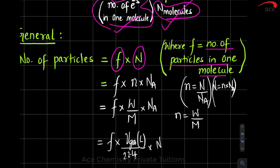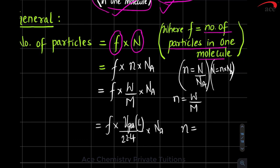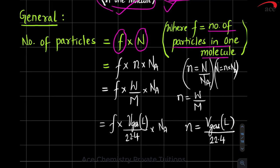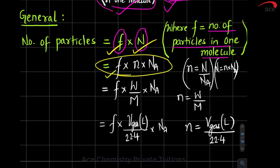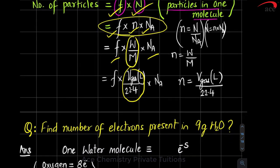So the full formula is: number of particles = factor × number of moles × Avogadro number, where number of moles = mass / molar mass, or for a gas = volume (in liters at STP) / 22.4. Using this formula, we will now solve numericals.